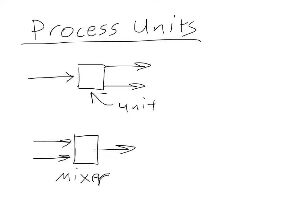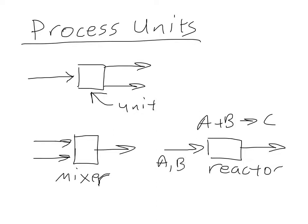Another unit is a reactor. And in a reactor, you might have A plus B going to C. So you might have A, B here, and then the outlet may be a mixture of A, B, and C, depending on how much reaction takes place within our reactor.